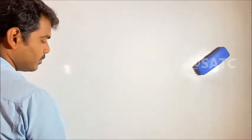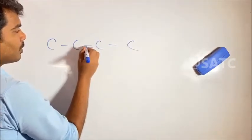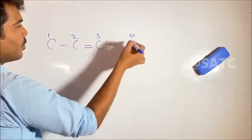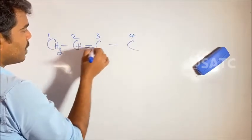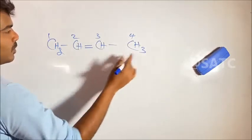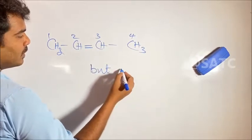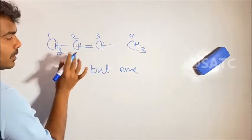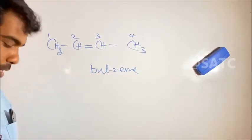Here we have another example: CH3–CH=CH–CH3, with carbons 1, 2, 3, 4 and the double bond between carbons 2 and 3. The four carbons give us 'buta-', the double bond gives '-ene', and the position is 2. So the name is buta-2-ene.